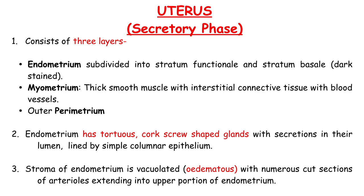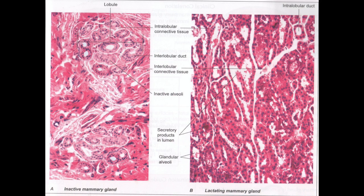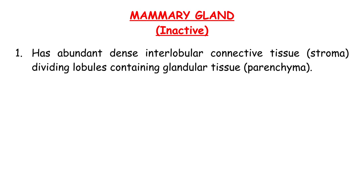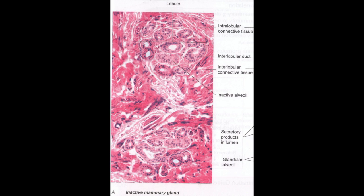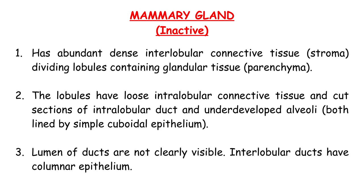Mammary gland inactive has abundant dense interlobular connective tissue stroma dividing lobules containing glandular tissue, i.e. the parenchyma. The lobules have loose intralobular connective tissue and cut sections of intralobular duct and underdeveloped alveoli, both lined by simple cuboidal epithelium. The lumen of ducts are not clearly visible. Interlobular ducts have columnar epithelium.